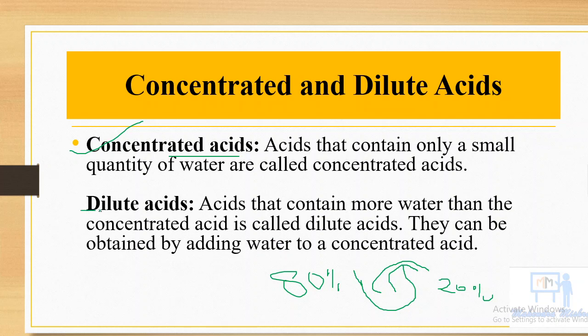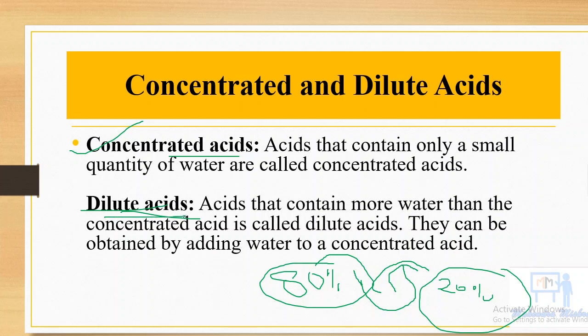On the other hand, if only 20% acid and 80% water is present, then this solution contains dilute acid. I hope you understand the difference between concentrated and dilute acid.